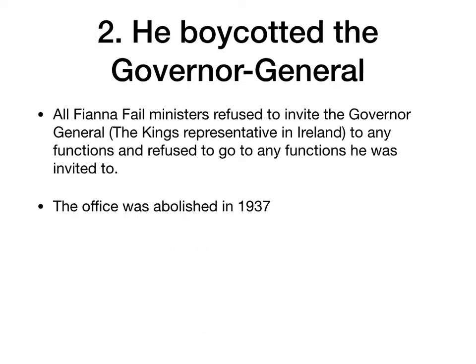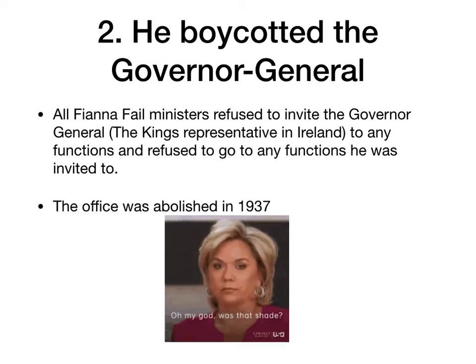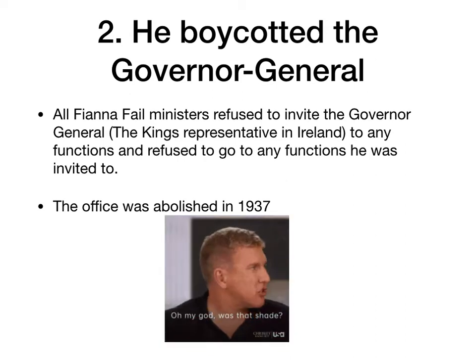The second step in removing the treaty was that he boycotted the Governor General. The Governor General had been appointed in the Anglo-Irish treaty as the king's representative in Ireland. The Fianna Fáil government basically ignored the man in office at the time, James MacNeill. They refused to invite the Governor General to any functions and refused to go to any functions he was invited to. This led to MacNeill resigning in 1932. De Valera replaced him with Donal Ó Buachalla, a man he picked who kept a low profile, and the office was abolished in 1937.